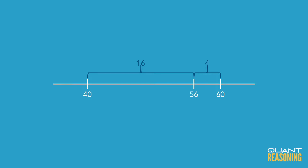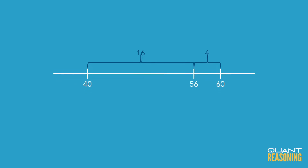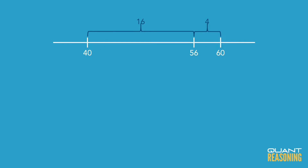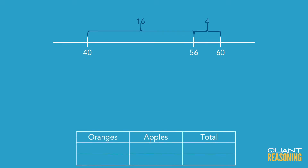So she bought four times as many oranges as apples. If I build a ratio table, oranges to apples to total is 4 to 1 to 5. But we know the total is actually 10, so the scale factor is 2. The actual number of oranges and apples that Mary bought was 8 and 2.